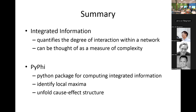Quick summary: integrated information quantifies the degree of interactions within a network — how tightly it hangs together. You can think of it as a measure of complexity: you need complex interactions and high information in order to have integrated information. We have the PyPhi package, which can be used to compute integrated information, identify local maxima, find integrated mechanisms, and find the structure of the system. Thank you for listening.